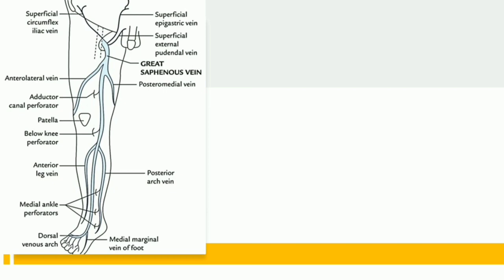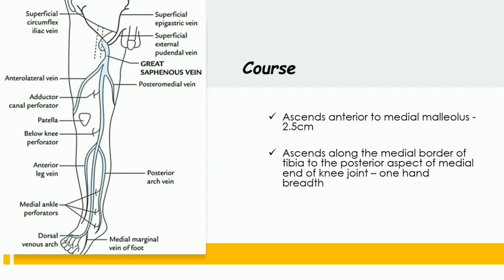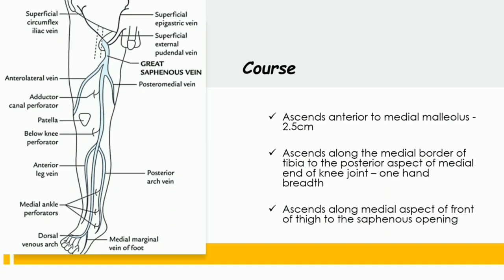Now what about the course? The vein ascends along the medial border of the leg. From the medial part of the foot, it ascends upwards, initially lying anterior to the medial malleolus — about 2.5 centimeters anterior to the medial malleolus. It then ascends along the medial margin of the leg, goes to the posteromedial aspect of the knee joint about one hand breadth posterior, and after crossing obliquely it ascends along the medial border of the thigh as it terminates into the deep vein.